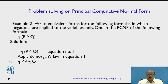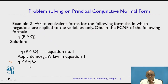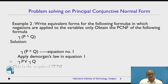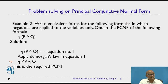Now, is negation P or negation Q the required PCNF or PDNF? PDNF means a disjunction of min terms. This is a disjunction of negation P or negation Q, so it is definitely not a PDNF. Is it a PCNF? Yes, of course — a max term is present, so it is a PCNF having a product of only one max term. This is the correct answer for example number 2.